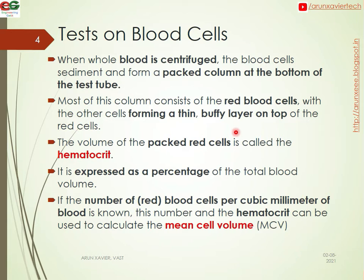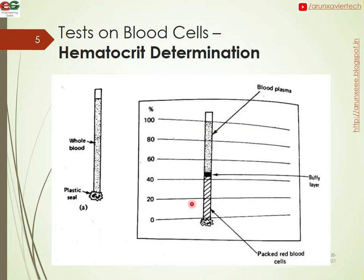The volume of the packed red cells is called the hematocrit, expressed as a percentage of the total blood volume. If the number of red blood cells per cubic millimeter of blood is known, this number and the hematocrit can be used to calculate the mean cell volume. The normal range is approximately 42–54% in men and 37–47% in women.